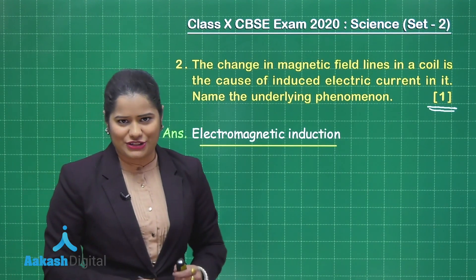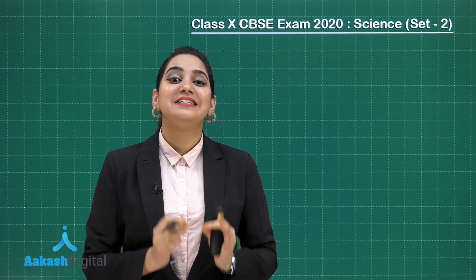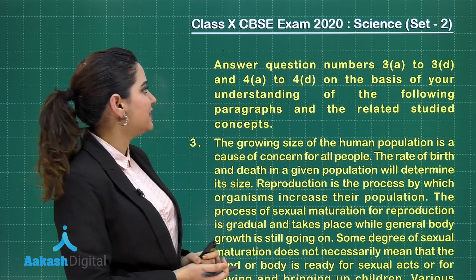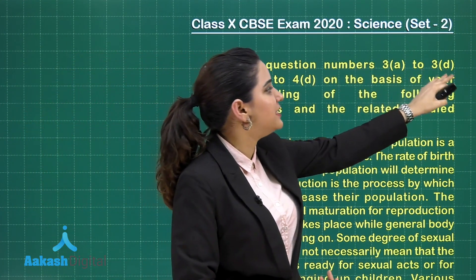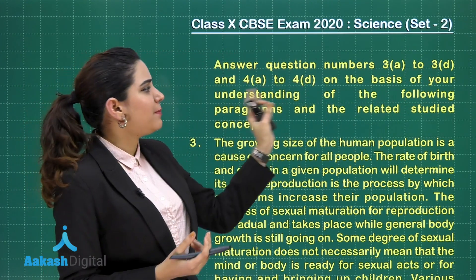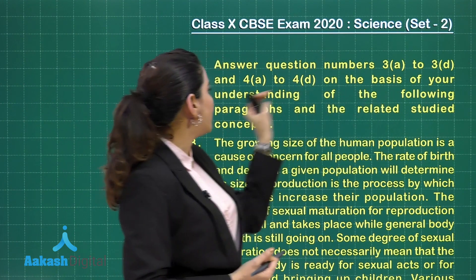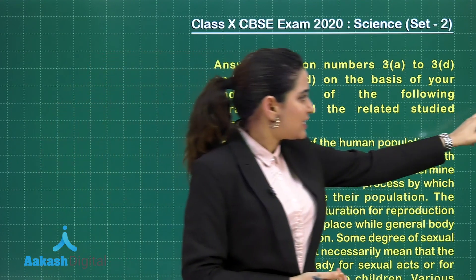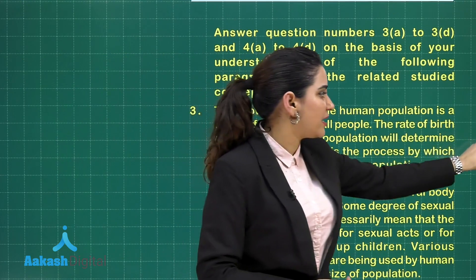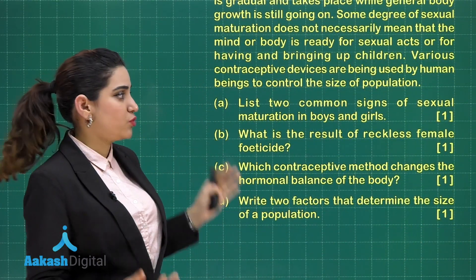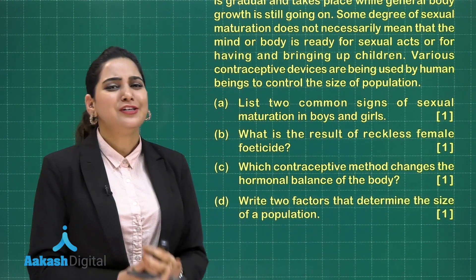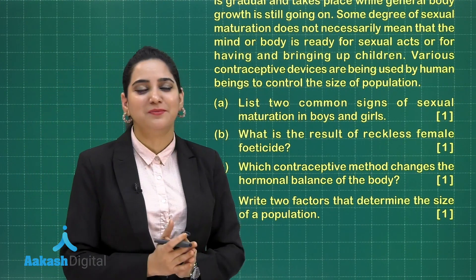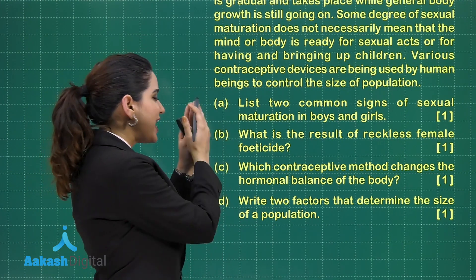Let's begin with the biology part. We will deal with section A first, which has paragraph-based questions. The general guideline is to answer question numbers 3A to 3D and 4A to 4D on the basis of your understanding of the given paragraphs and related studied concepts. Let's begin with question number 3. This is a paragraph-based question with four parts, every part carrying one mark, so this question will fetch us four good marks. I'm not going to read the entire paragraph to keep the video concise — let's directly try to solve every part.